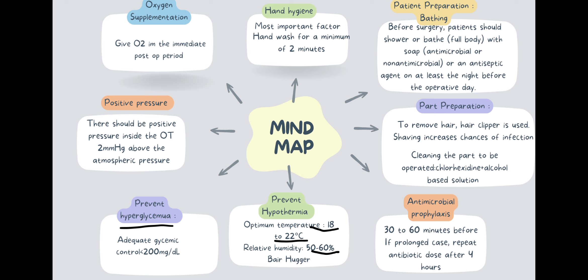Next is maintaining positive pressure in the OT. Why is this important? Because otherwise, if there is negative pressure in the OT, air from outside, from other zones of the operation theater, can flow into this aseptic zone and cause contamination. So we maintain the pressure in the OT 2 mmHg above atmospheric pressure.